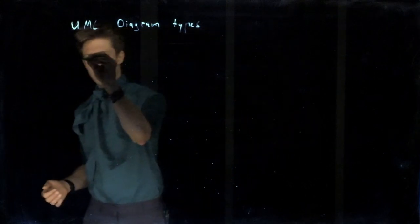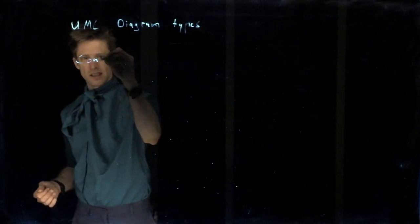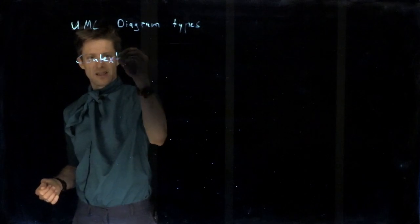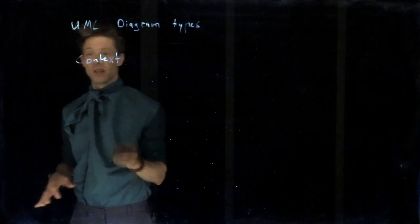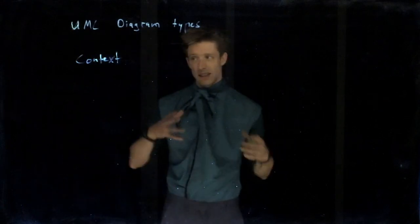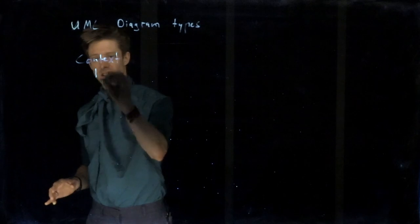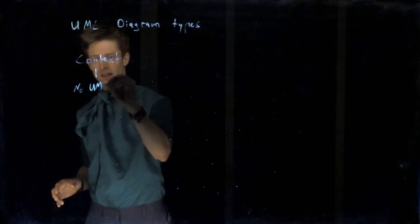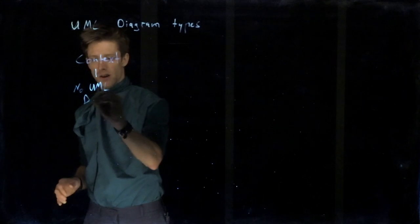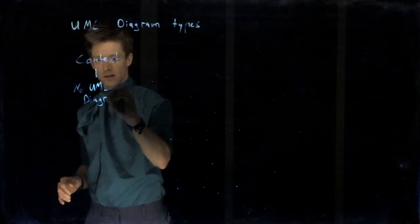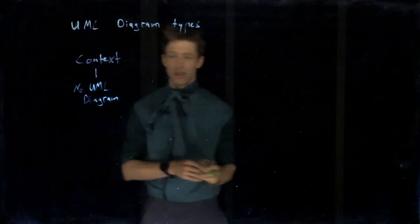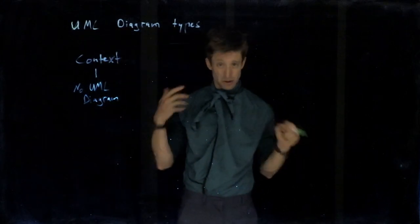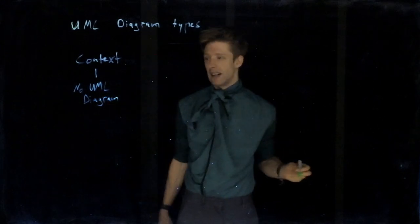We might want to describe the context of our system, how it relates to the outside world, how it relates to other systems. Here, we actually don't have any direct UML diagrams that are particularly well suited for context, but very often we use, for example, class diagrams or component diagrams.